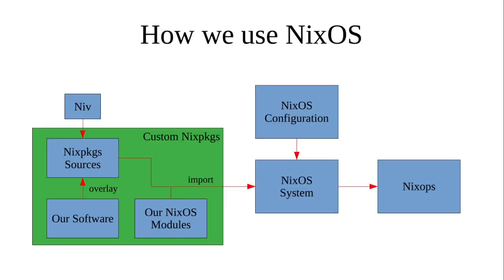Now let me tell you about how we structure our software in NixOS. First, we have NIV, which specifies a Nix packages version that our software uses as well as one the operating system uses. These go into the Nix packages sources. Our custom software derivations then get overlaid on these Nix packages, allowing them to seamlessly make use of different package sets. We also have our own custom NixOS modules. These Nix packages and NixOS modules get imported into the NixOS system configuration on a particular machine, combined with the desired configuration options, and then put into a NixOps deployment, which gets built locally and uploaded and installed into the remote system.